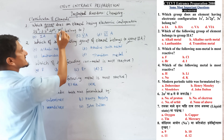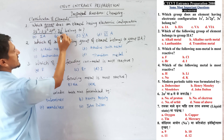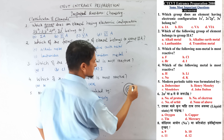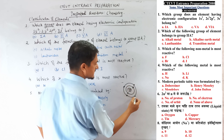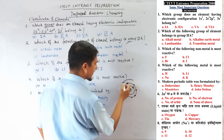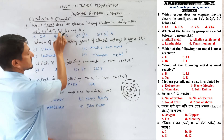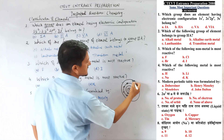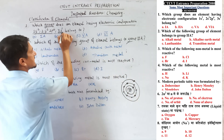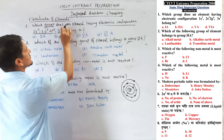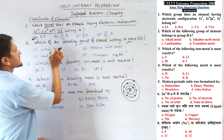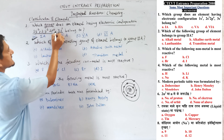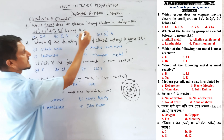Question number 1 solution: the configuration ends in 3s1, so the last shell electron is 1. The group answer is 1A. For the period: first shell, second shell, third shell — 1, 2, 3 — so it belongs to the third period.